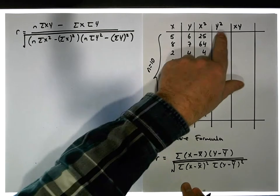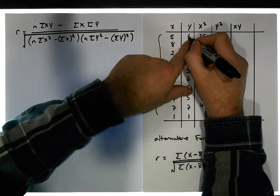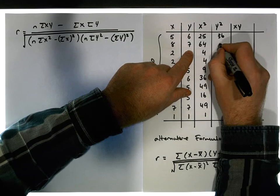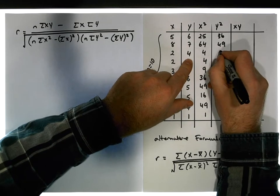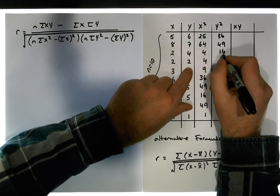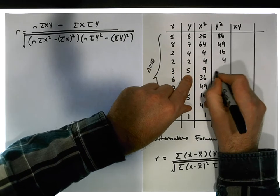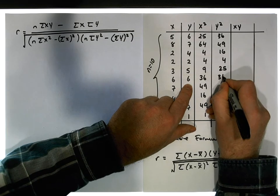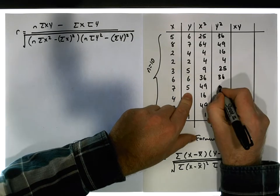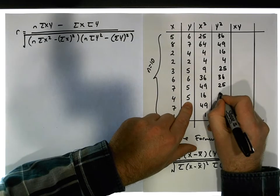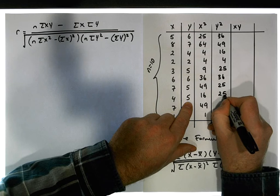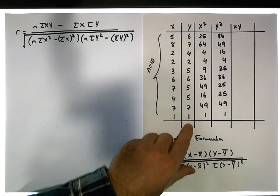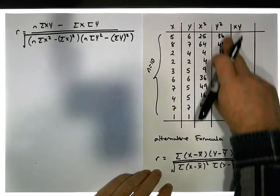The y squared values are: six squared is 36. Seven squared is 49. Four squared is 16. Two squared is 4. Five squared is 25. Six squared is 36. Five squared is 25. Five squared is 25. Seven squared is 49. And one squared is 1. So now we have the y squared values.